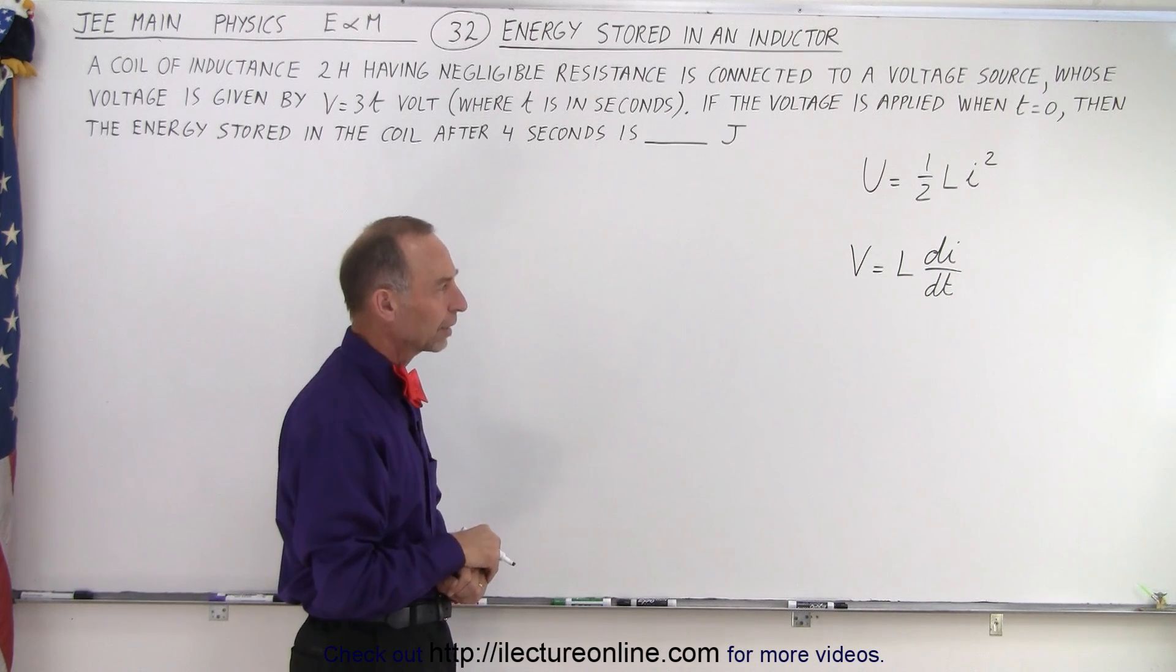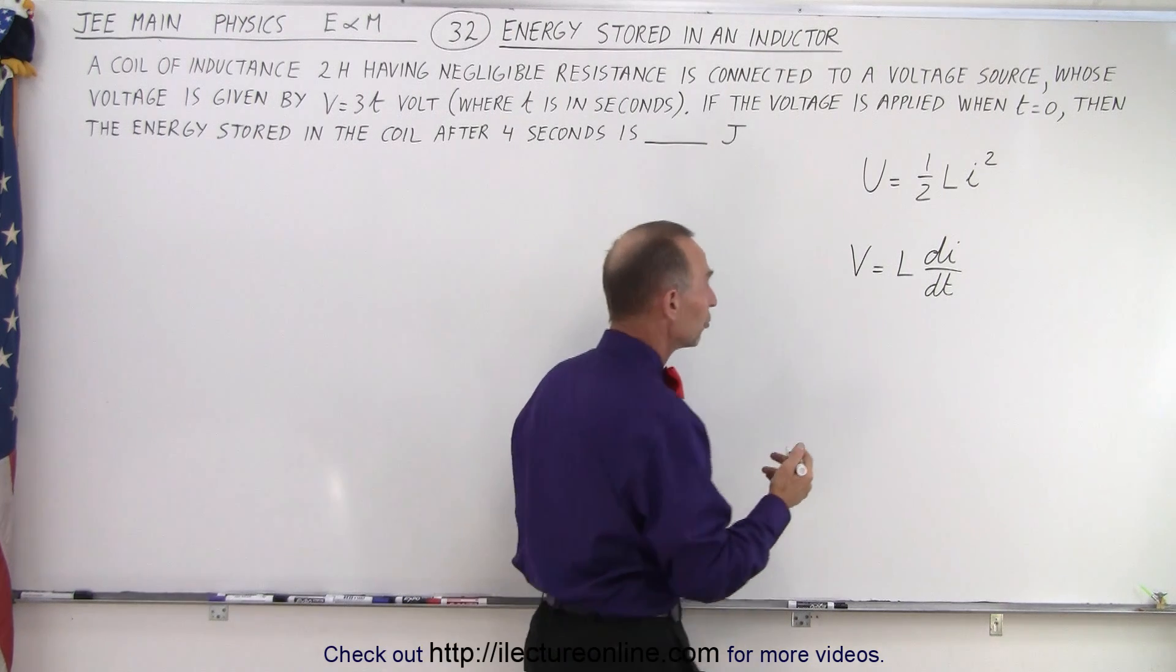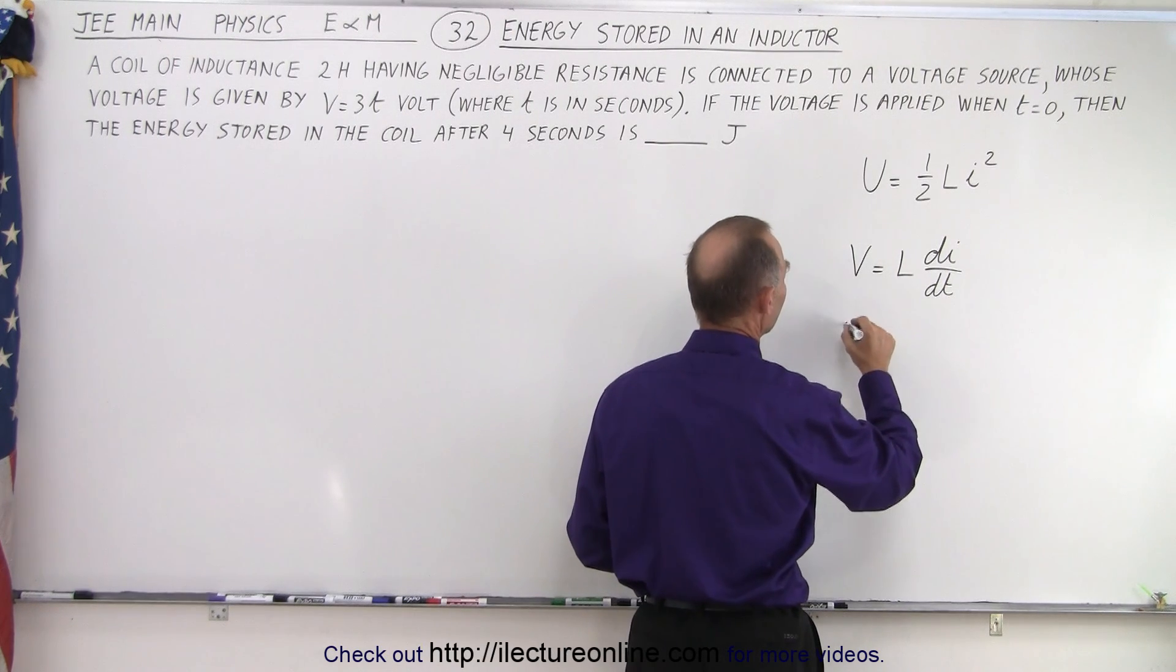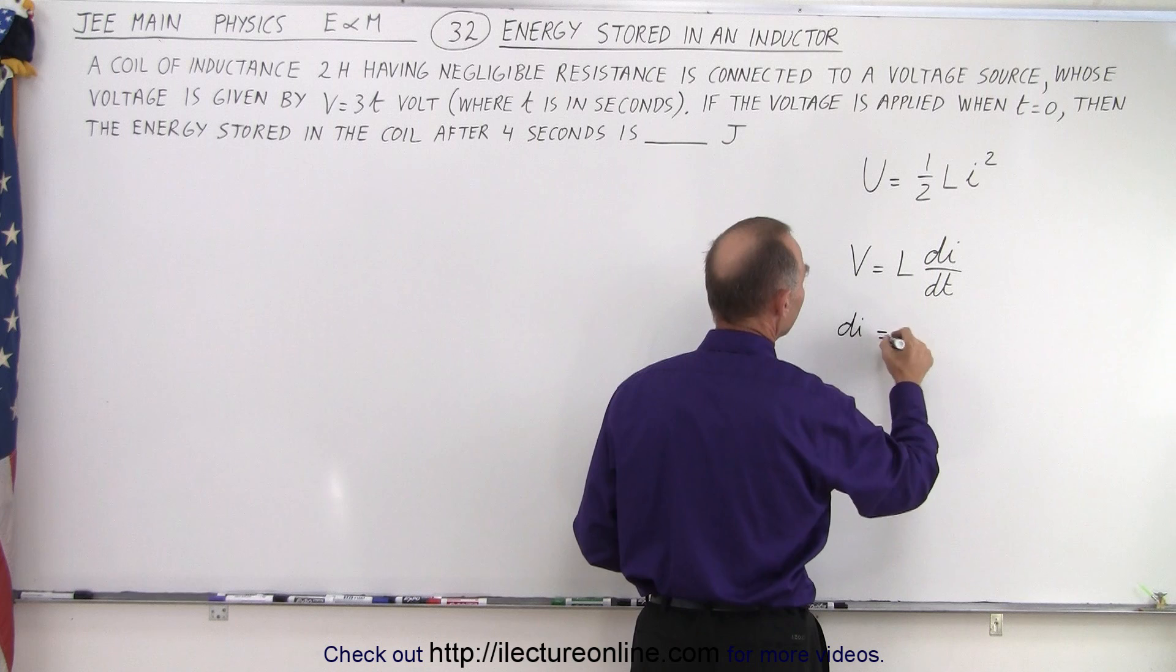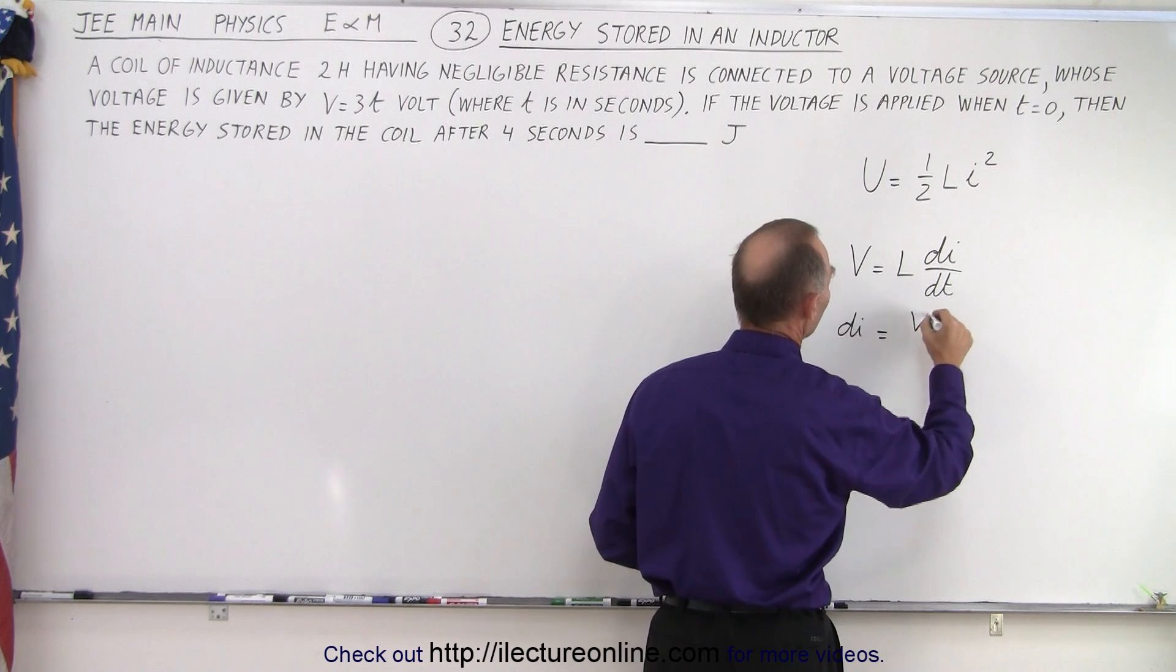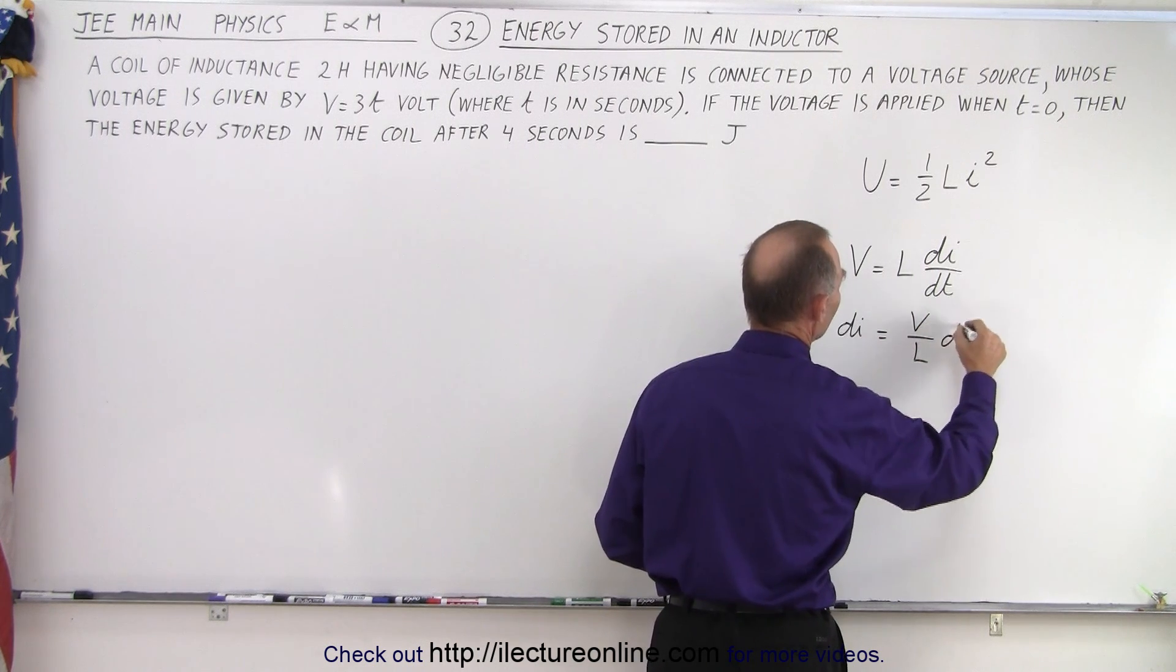So how do we get the current out of this? Well, we can set up an equation. We can say that dI, if we solve for dI, is equal to V over L times dt.